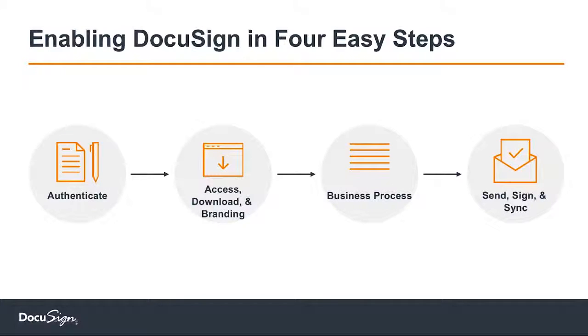We're going to walk through some code to see the SDK in action. There are really four key steps to using the SDK. One: authenticate with DocuSign using the SDK. Two: access templates and download them for offline usage. Three: your own business process of collecting and sending documents for signature. And four: syncing them. Those are the four key steps to using the SDK within your app.